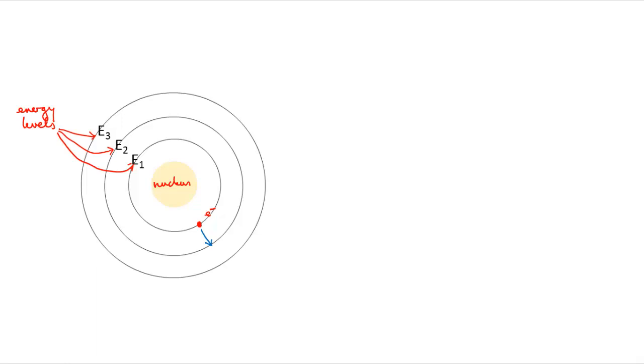So, where does the electron get the energy from, this precise amount of energy? Well, it absorbs a photon that has exactly the right wavelength to give it the exact quantum of energy that it needs to jump up a level.